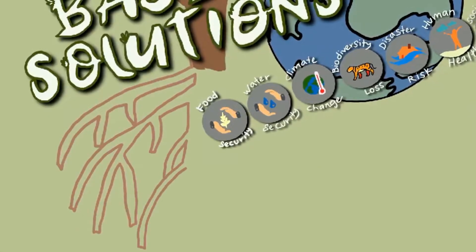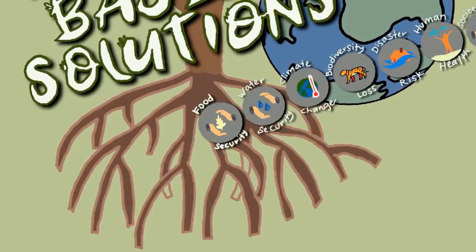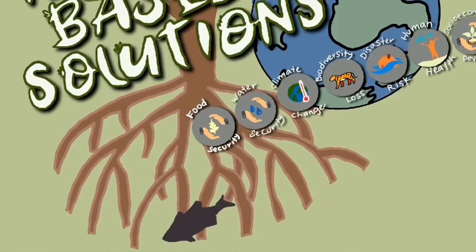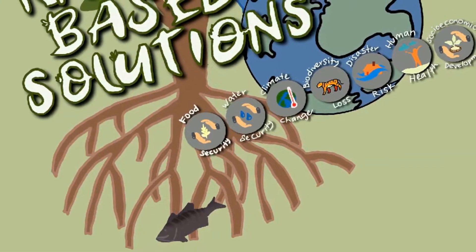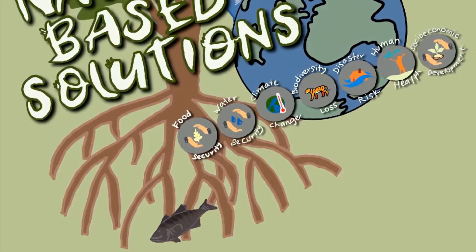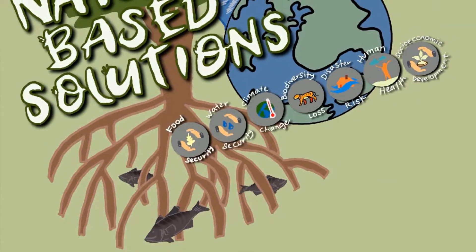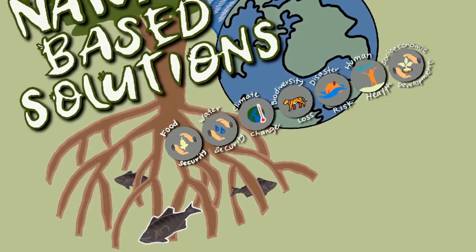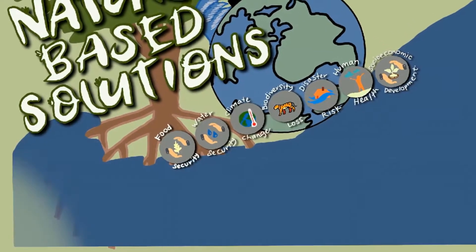The conservation of mangroves is a model example of investing in NBS. Mangroves are important ecosystems for biodiversity and provide many ecosystem services. They act as a nursery for fisheries, providing food and shelter for young fish to mature.